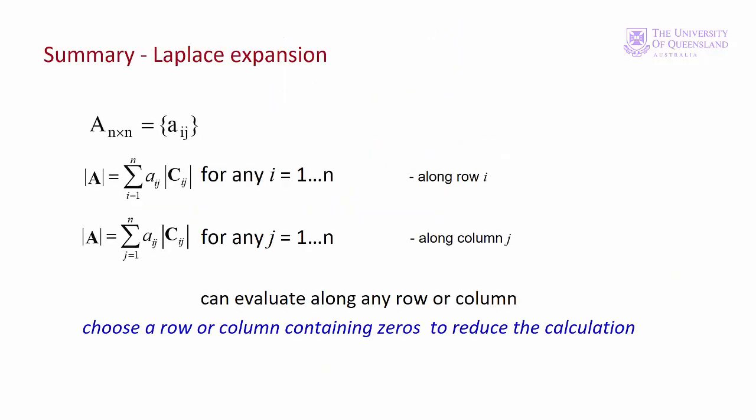The Laplace expansion can be used for any n by n matrix. For a 4x4 matrix, there are 4 elements and 4 corresponding cofactors, each calculated from a 3x3 determinant. For a 5x5 matrix, there are 5 cofactors each requiring a 4x4 determinant, and so on. For a large matrix, having one or more zeros in a row or column reduces the calculation considerably. In this course, the largest matrix we'll encounter is a 3x3.